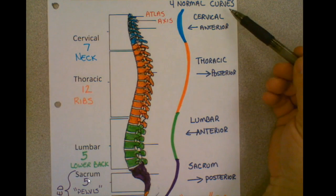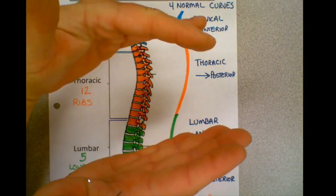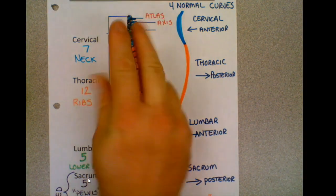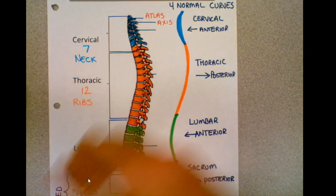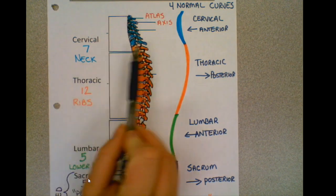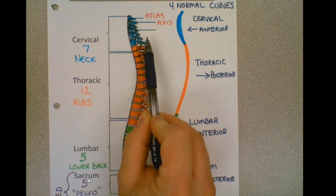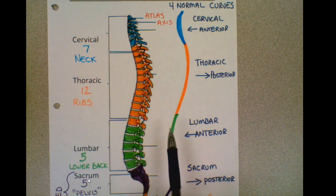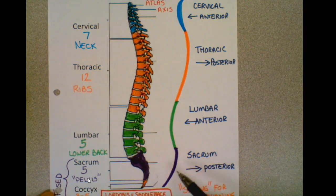More importantly, we need to know that there are 4 curves to our vertebrae, and this acts as a spring. So the vertebrae can spring — it's not a straight bar, it can compress like a spring. These curves allow this compression. Your cervical vertebrae are going to curve anteriorly, towards the front. The thoracic then curve the opposite way, posterior. Then your lumbar curve back anteriorly, and then your sacrum and coccyx curve back the opposite way, posterior.